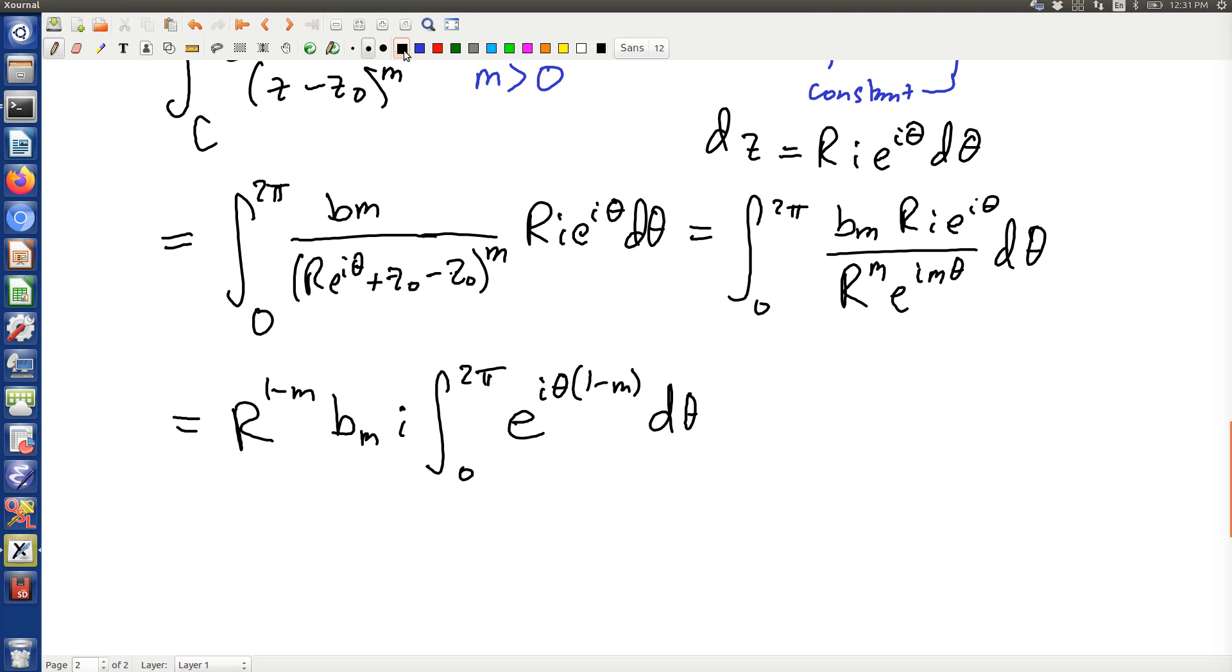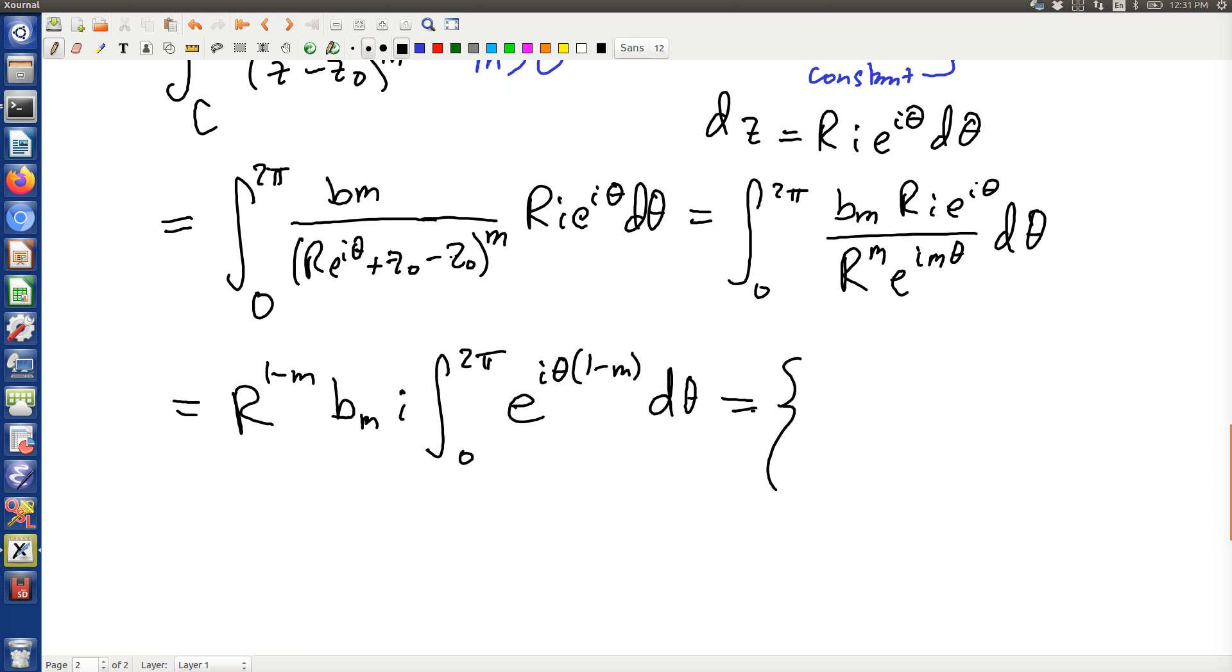You'll notice, kind of implied in how I wrote this, m is greater than 0. So you'll get two possibilities here. If m equals 1, this will be r^(1-m) bₘ i times 0 to 2π dθ. Otherwise, I'll have r^(1-m) bₘ i, 0 to 2π, e^(iθ(1-m)).